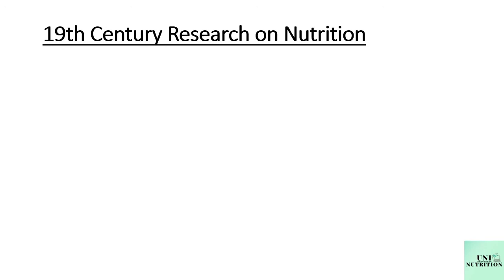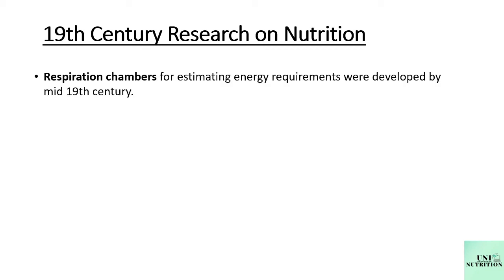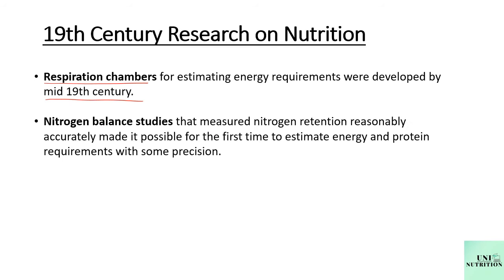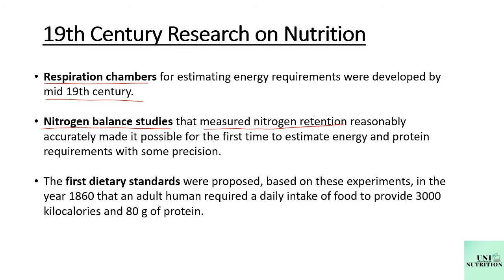The next topic is 19th century research on nutrition. Respiration chambers were developed in the mid 19th century. Nitrogen balance studies were conducted in the 19th century that measured nitrogen retention. And the first set of dietary standards were proposed in 1860, stating that an adult human required a daily intake of 3000 kilocalories and 80 grams of protein.